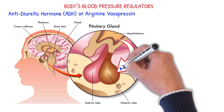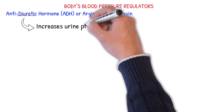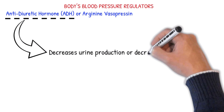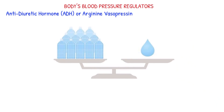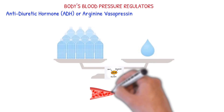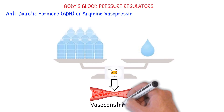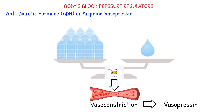ADH tells your kidneys how much water to conserve. Diuresis means increased urine production. Antidiuresis means it decreases urine production, essentially decreasing water excretion. ADH constantly regulates and balances the amount of water in your blood, and in large concentration, it has a vasoconstrictive effect. Therefore, it can directly affect blood pressure. The name vasopressin is derived from its vasoconstrictive effect.